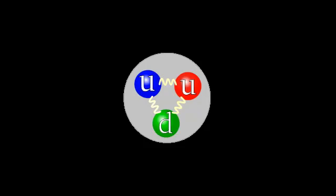There are six types of quarks, known as flavors: up, down, charm, strange, top, and bottom. Up and down quarks have the lowest masses of all quarks. The heavier quarks rapidly change into up and down quarks through a process of particle decay.